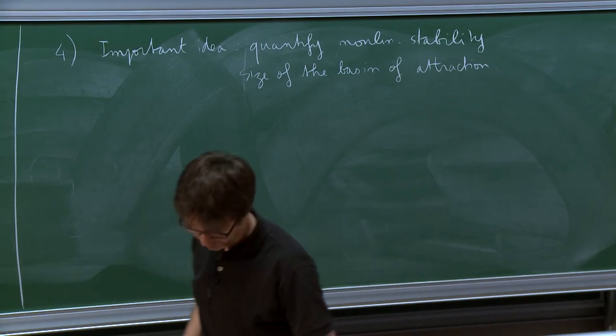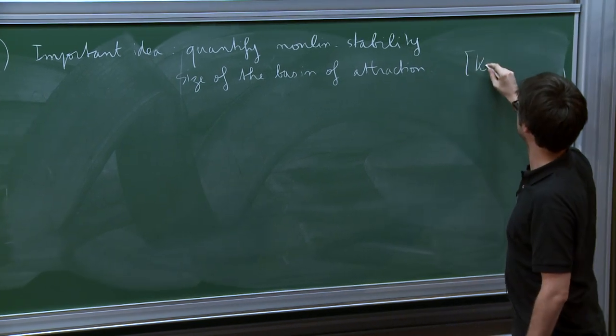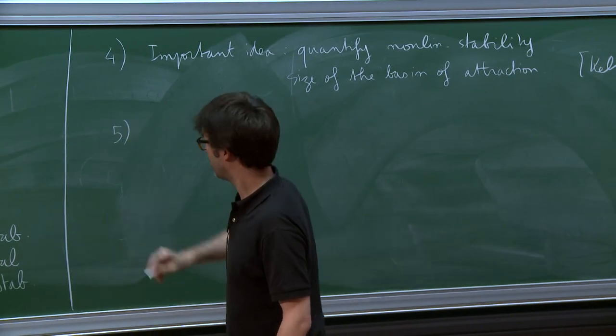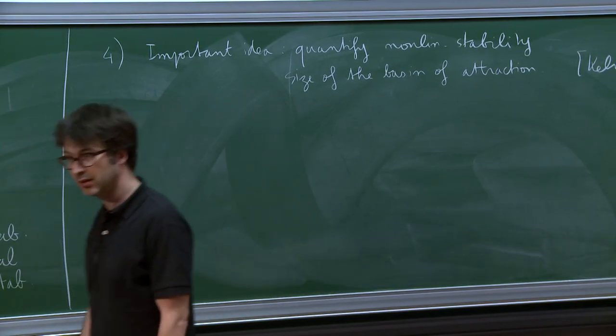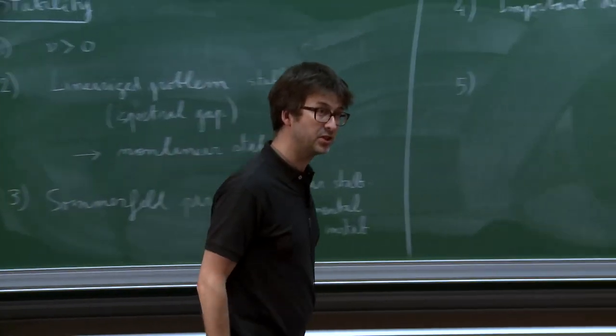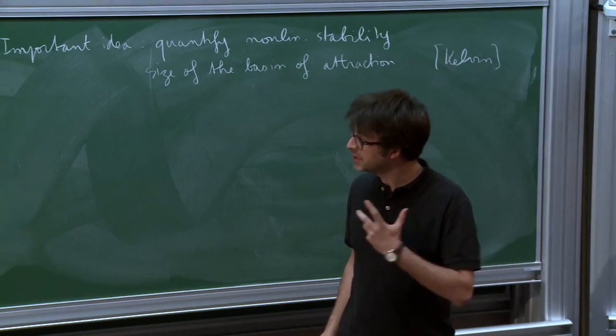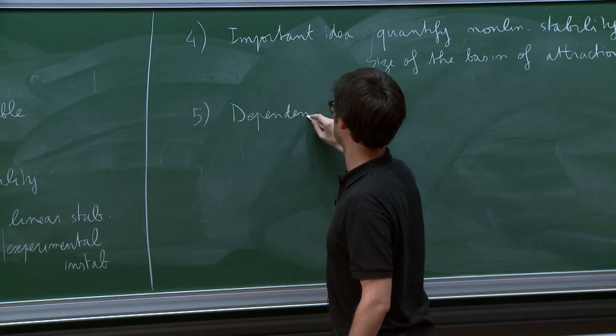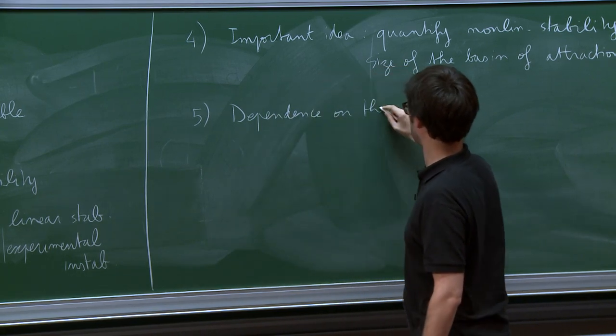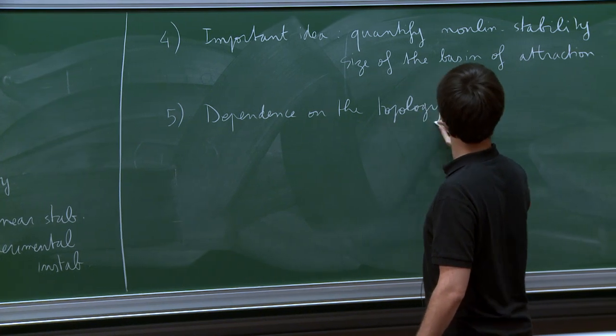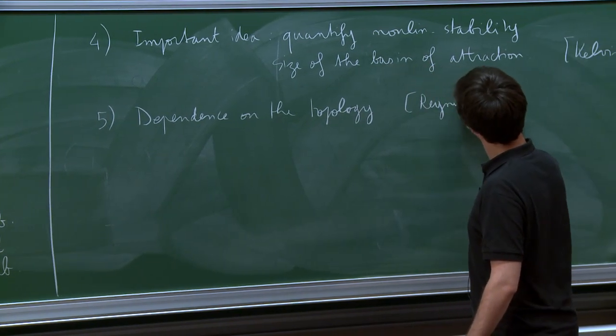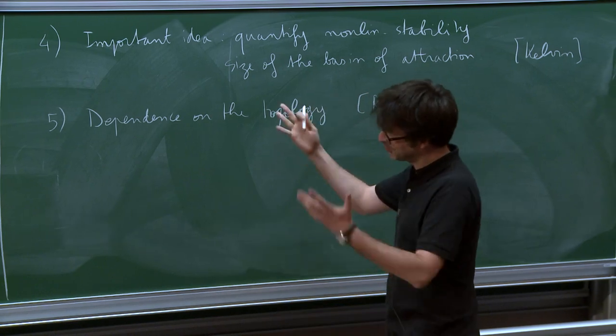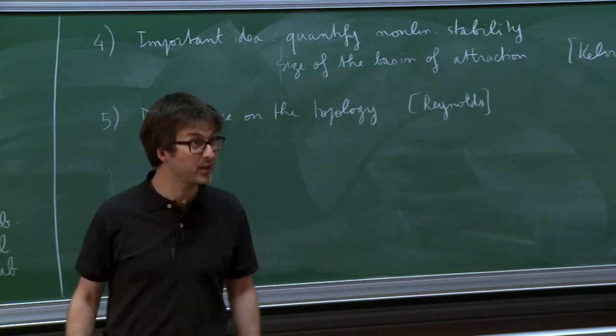And this was already underlined by Kelvin. And finally, there is a last idea, which maybe we're not so used to in partial differential equations, which is that the size of the basin of attraction really depends strongly on the topology that you choose. And this idea goes back to Reynolds, though he phrased it in more physical terms. So if you put all of this together, you see that the right question is the following.